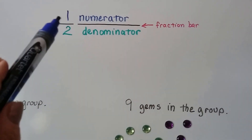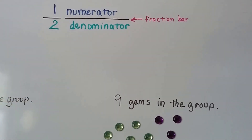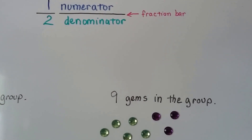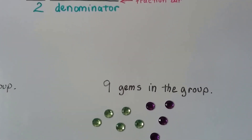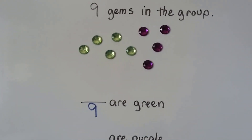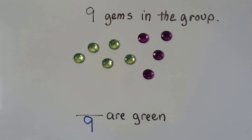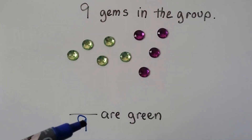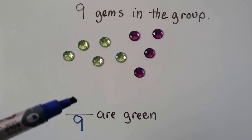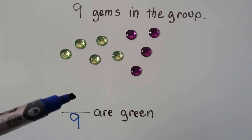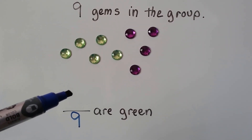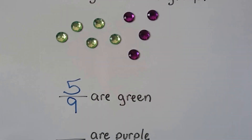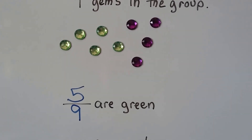The top number is the numerator and the bottom number is the denominator, and the fraction bar separates them. You'll learn more about those words in third grade. The bottom number tells us how many are in the group, and the top number is the one we're looking for. How many are green? One, two, three, four, five are green. So five-ninths of the group are green.